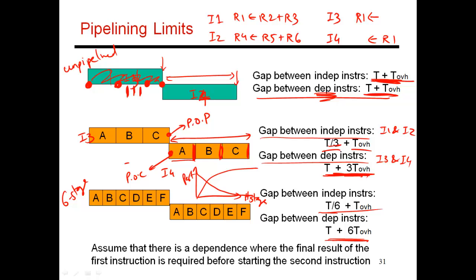So pipelining actually hurts a program that is full of dependencies. And in reality, any program will have a mix of both dependencies and independent instructions. There will be some sequence of instructions where there will be a chain of dependencies, and then there will be some sequences of instructions where all instructions are independent. So ultimately, the eventual performance and the eventual curve will be a combination of these two curves. So it looks something like this. So as you increase the number of stages, the performance increases for a while. And then after some time, it starts to go down because each additional stage is hurting your dependent instructions. And each additional stage is really not causing a huge improvement in performance because of the latch overheads.